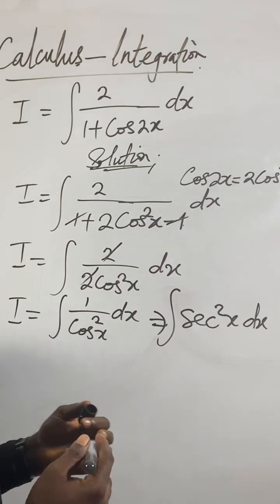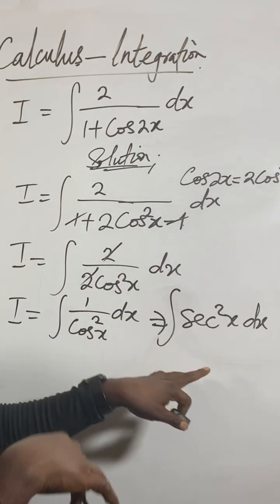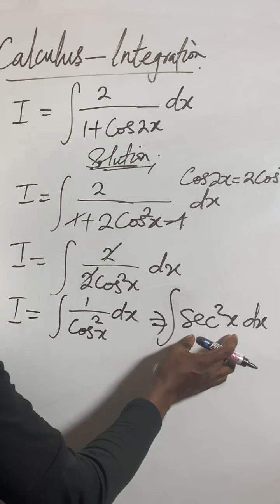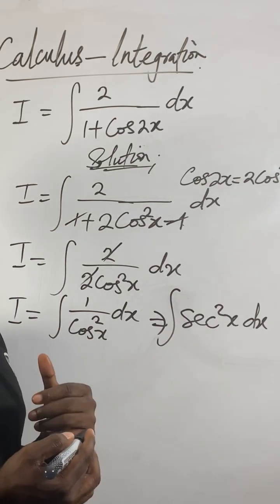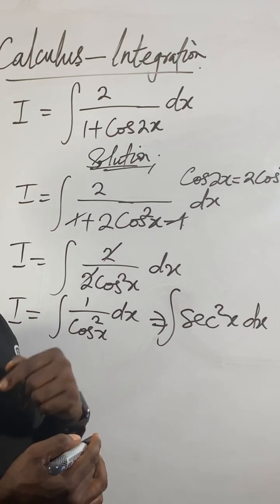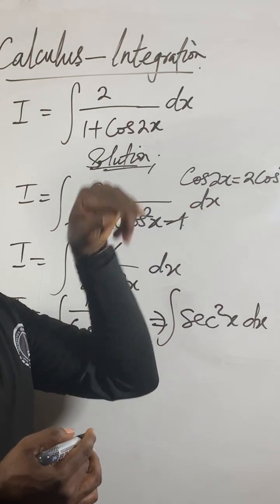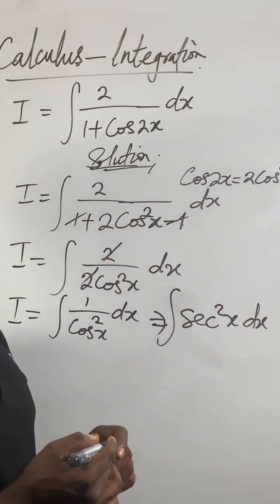With respect to x. Now I will integrate because I know the integration of sec²x will give us tanx. The differentiation of tanx will give us sec²x. So if I integrate sec²x, it will give us back tanx. That's why we say integration is the anti-derivative of differentiation.